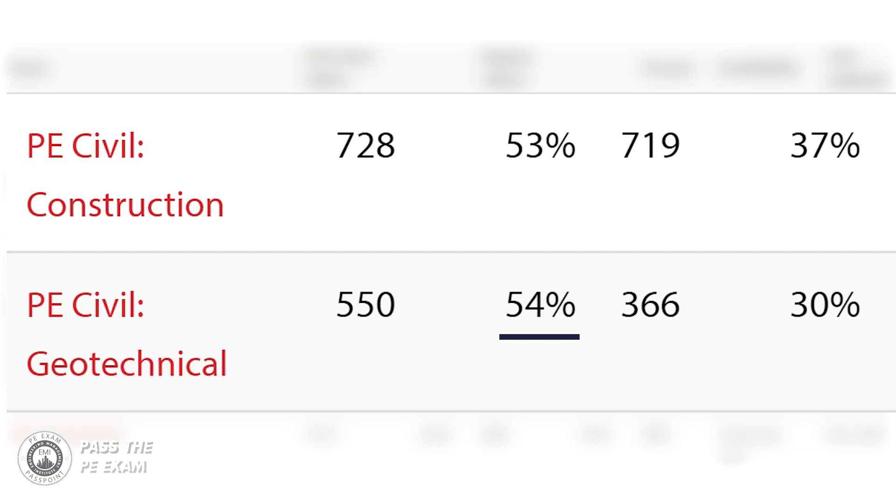Still not sure if this exam is for you? Let's look at the passing rates for the civil construction computer-based PE exam. As of December 2021, the PE Civil Construction Depth exam has a 53% passing rate for first-time takers and a 37% passing rate for repeat takers. You can find those numbers on the NCEES website. Comparing to the PE Civil Geotechnical exam discussed in the previous episode, that exam had a 54% pass rate for first-time takers and a 30% pass rate for repeat takers.